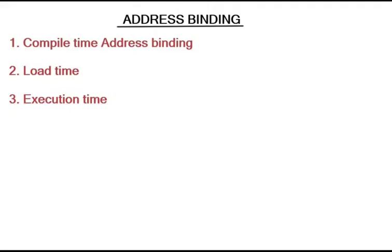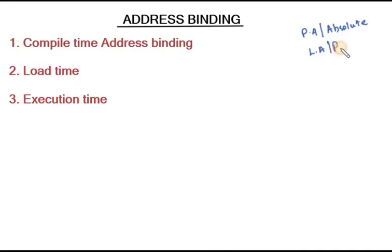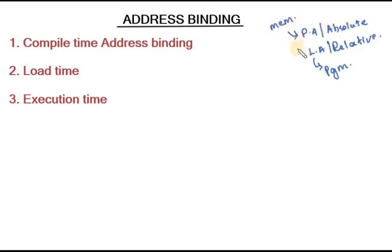We know different kinds of addresses. Physical address, which is also called absolute address, and logical address, which is also called relative address. Logical address is the address defined by the program, and physical address is where the program actually resides in memory.